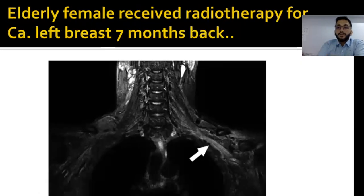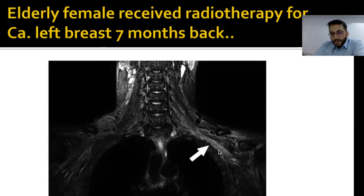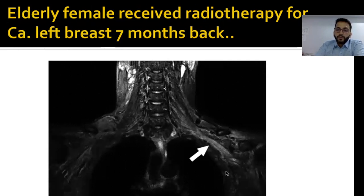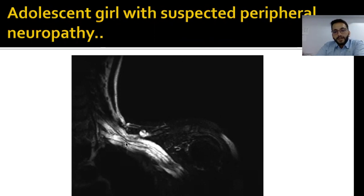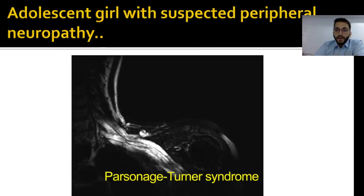Another adult female patient who received radiotherapy for carcinoma breast seven months earlier now presents with brachial plexopathy. There are no nodular lesions to suggest metastasis, but there is increased signal intensity of the cords of the brachial plexus with possible enhancement — consistent with post-radiation brachial plexopathy. Another adult female patient with similar findings of extensive edema and hyperintensity involving the roots, trunks, and cords of the brachial plexus, but with no prior radiation history — only a small episode of viral illness one to two weeks earlier. This is most likely Parsonage-Turner syndrome, or inflammatory brachial plexopathy.